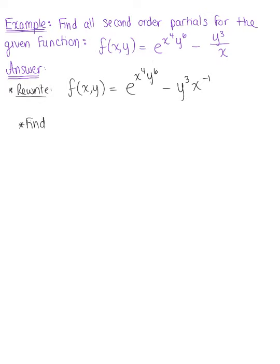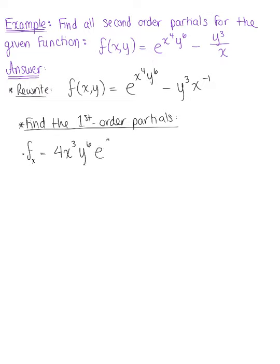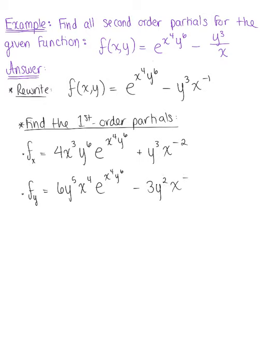First things first, we have to find the first order partials. We have two variables, so we will have two first order partial derivatives. The partial derivative with respect to x is going to be 4x cubed times y to the sixth times the natural exponential raised to x to the fourth times y to the sixth, plus y cubed times x to the negative two. The first order partial with respect to y is 6 times y to the fifth times x to the fourth multiplied by the natural exponential raised to x to the fourth times y to the sixth, minus 3y squared times x to the negative one.